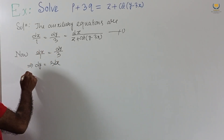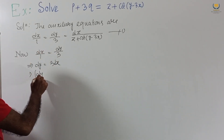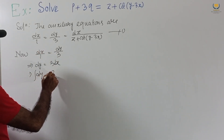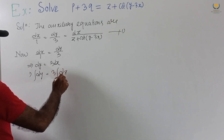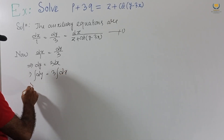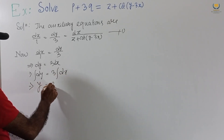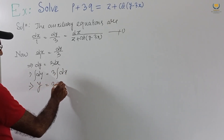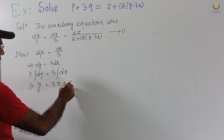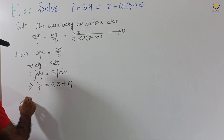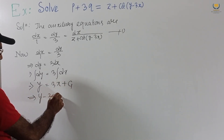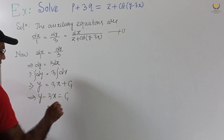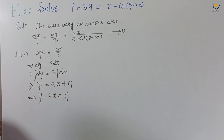Taking the first two fractions, DY equal to 3DX. Integrating both sides, we get Y equal to 3X plus C1, that is Y minus 3X equal to C1.